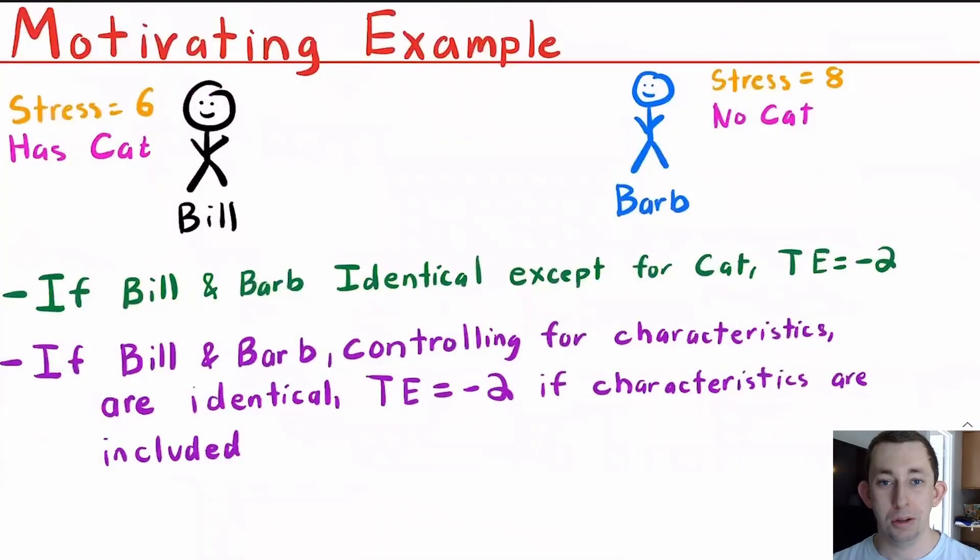The motivating example is once again going to be the effect of having a cat on your stress level. So here I've got two people, Bill and Barb. Bill has a cat. Bill's stress level is 6. Barb does not have a cat, and her stress level is 8. So what if Bill and Barb were exactly the same except for the fact that Bill had a cat and Barb did not? Well, then we would say the treatment effect of having a cat is probably minus 2 when we measure our stress level from 0 to 10.